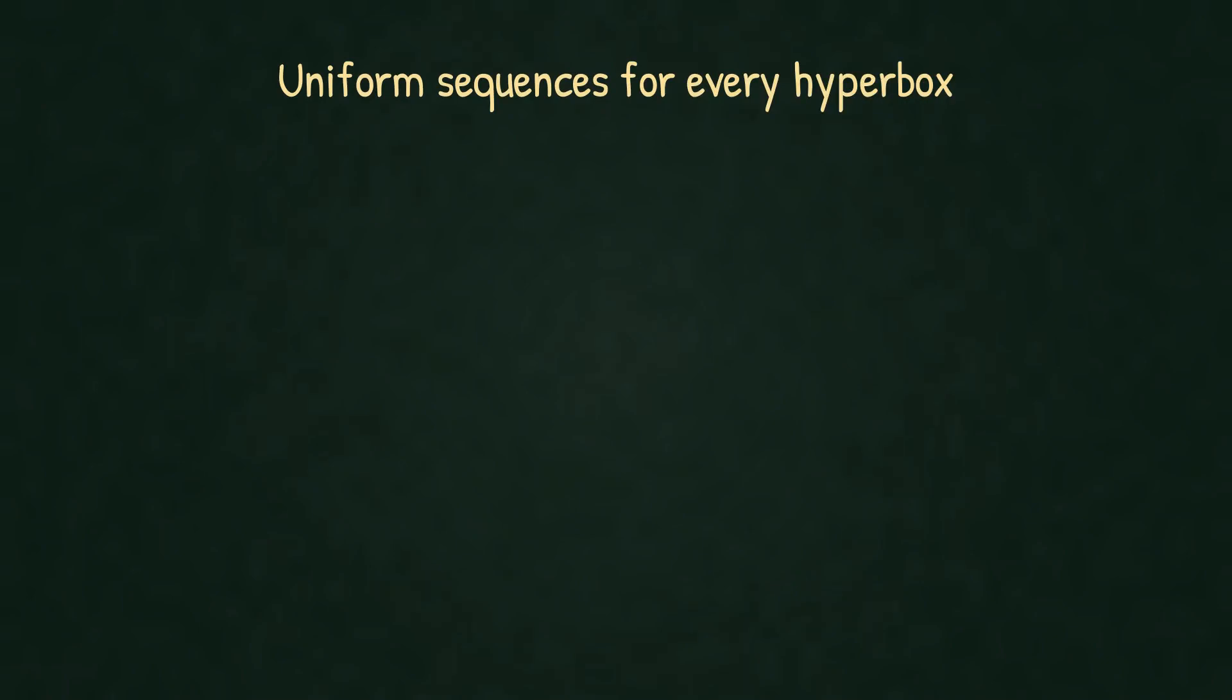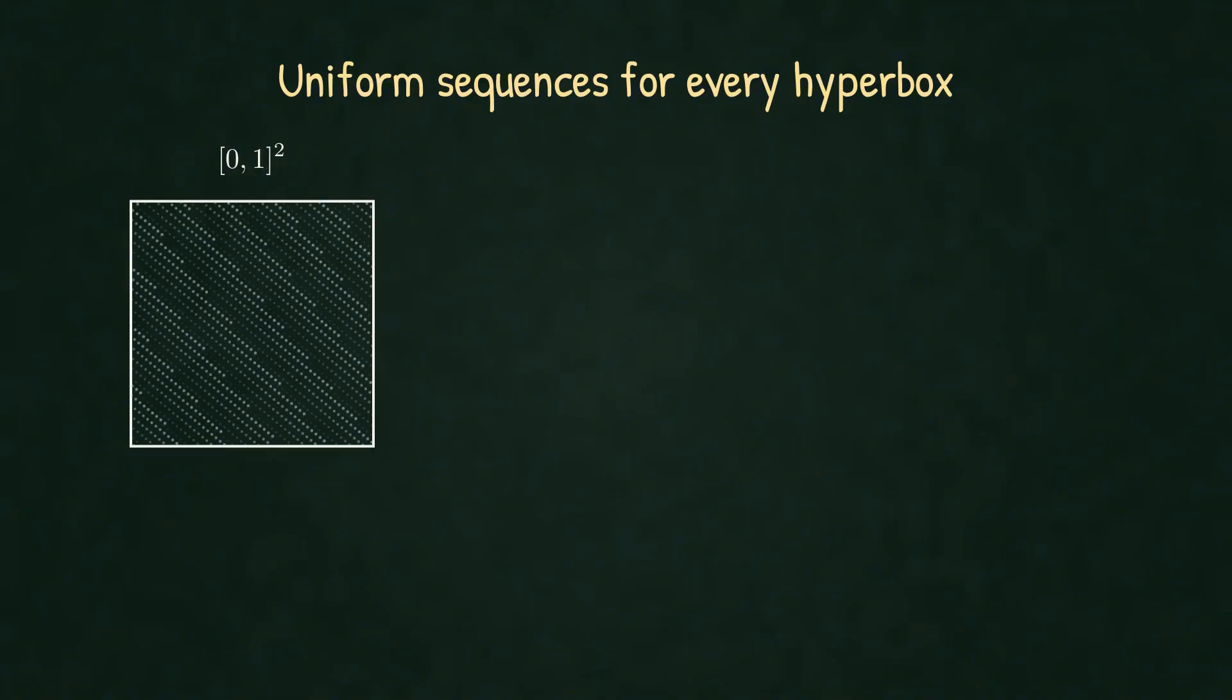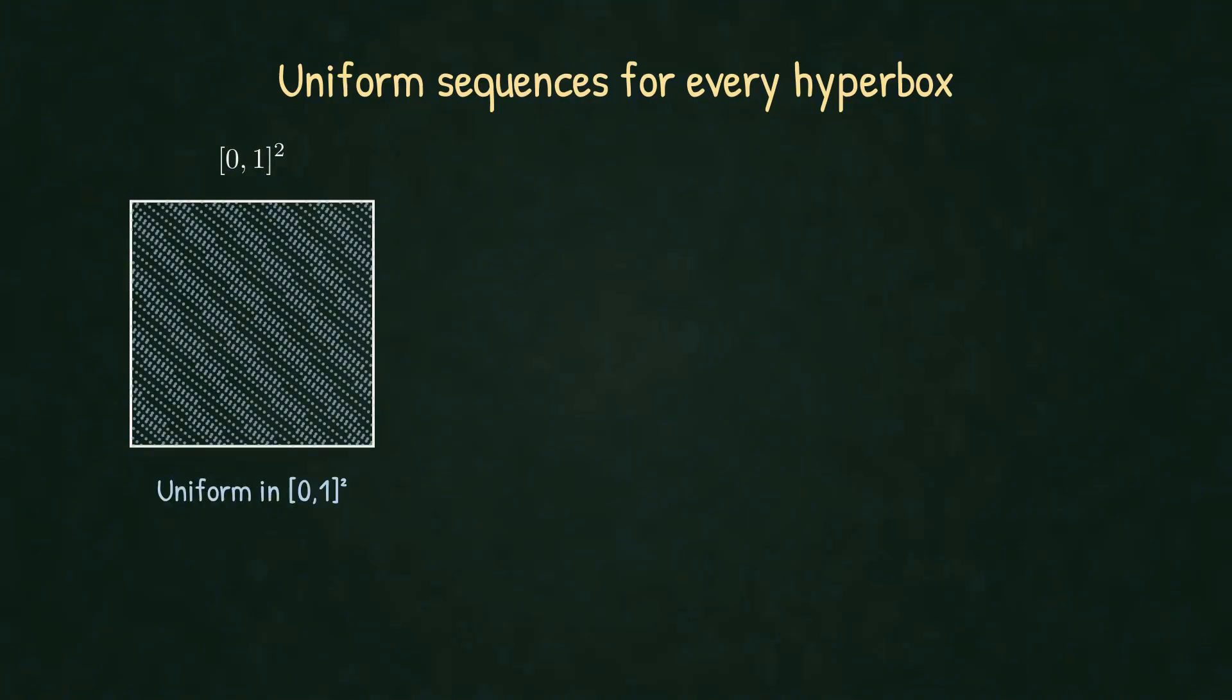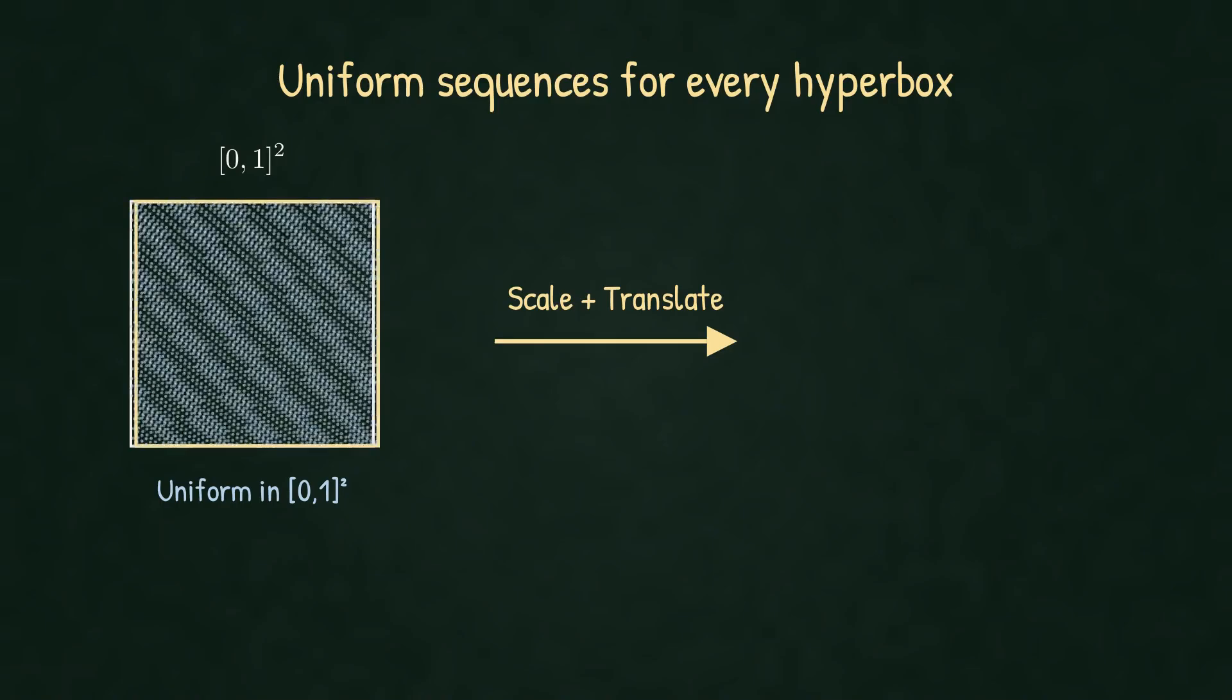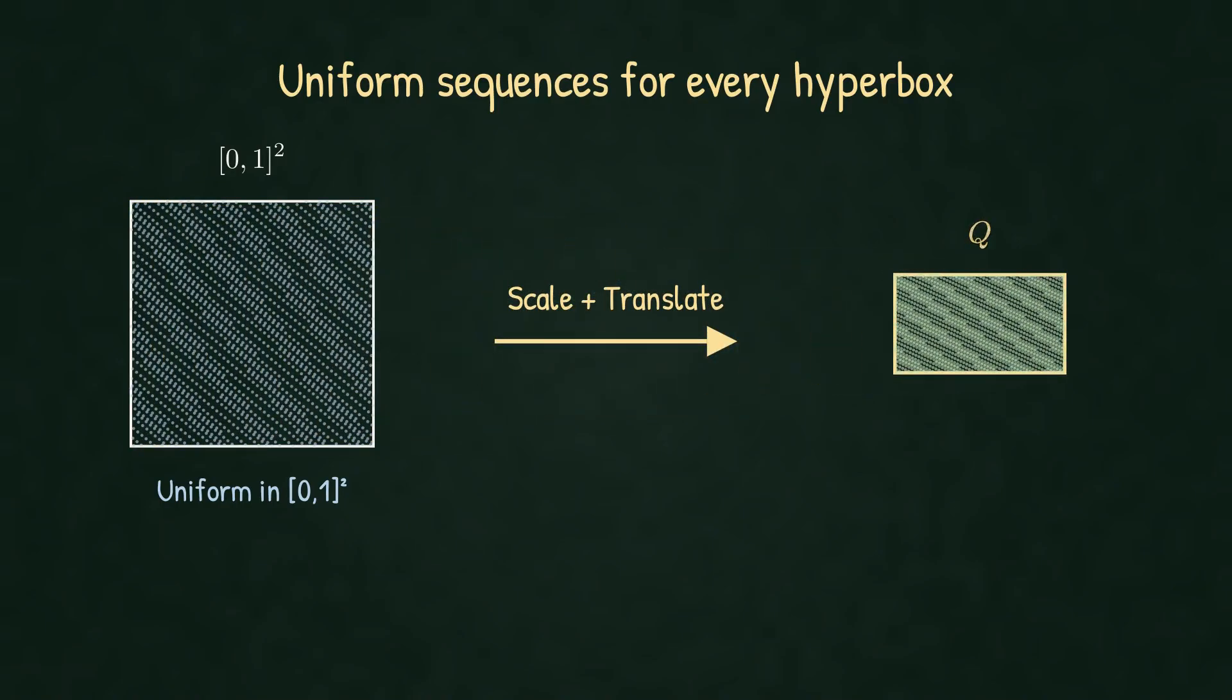Irrational rotation works for any hyperbox Q, not just the unit cube. Start with uniform points in the unit cube. Now scale and translate the box itself. Watch. The points transform too. The uniform distribution in the unit cube becomes a uniform distribution in Q. This is the key. By scaling and translating, irrational rotation becomes a uniform sequence generator for every hyperbox Q.